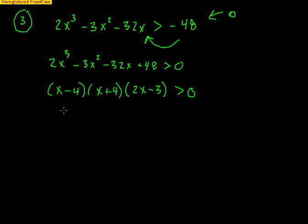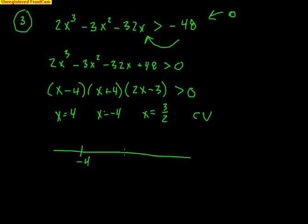So we have critical values: 4, negative 4, and positive 3/2. We make our number line and place them in order: negative 4, then 3/2, then 4. That gives us four areas to test. Since these critical values make me 0 and I'm strictly greater than 0, these would be open dots. Pick any number less than negative 4 — like negative 1000. Negative 1000 minus 4 is negative; negative 1000 plus 4 is still negative; 2 times negative 1000 minus 3 is even more negative. Three negatives: the first two make a positive, times a negative makes a negative. I'm looking for values greater than 0, so I don't need negatives there.